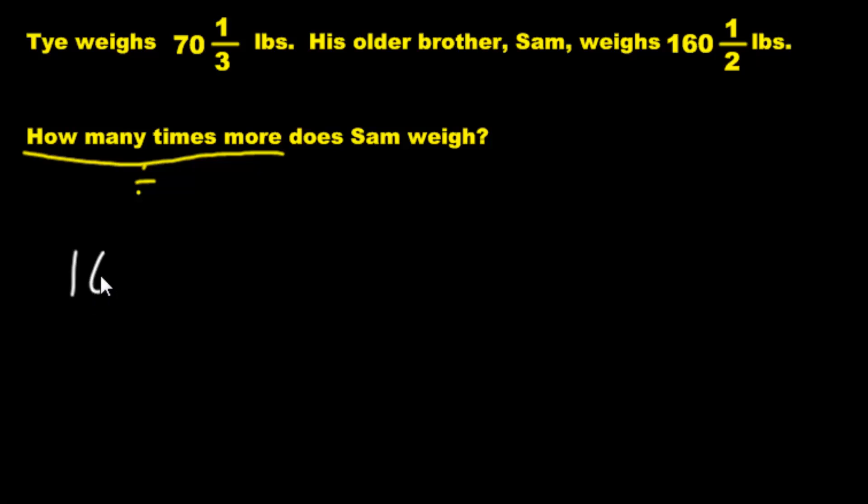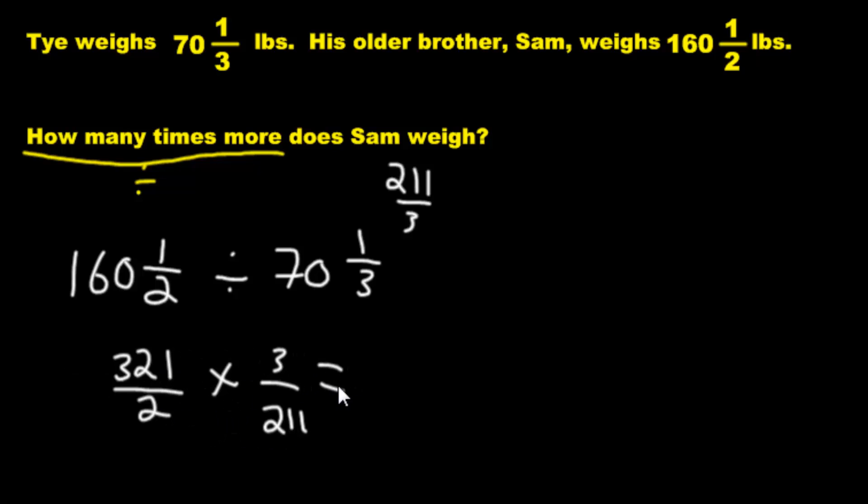We'll take 160½ pounds. I won't write LBS just to save space. We're going to divide it by 70⅓. Now we have big numbers to deal with, which is fine. We're going to go 2 times 160, that's 320, plus 1 is 321/2. Multiplied, right? And then we're going to flip this. But what is this? Well, this is going to be 210 plus 1 is 211. This is going to be 211/3. But when we flip it, it becomes 3/211.